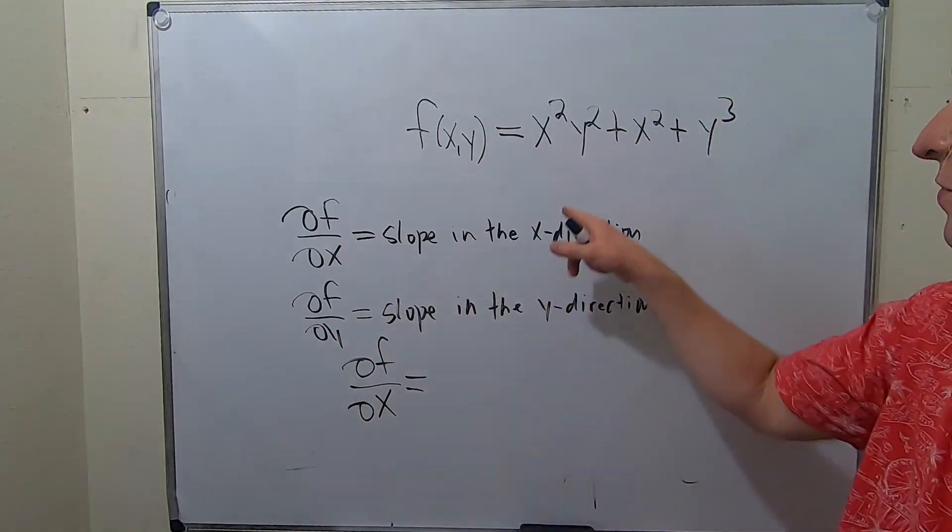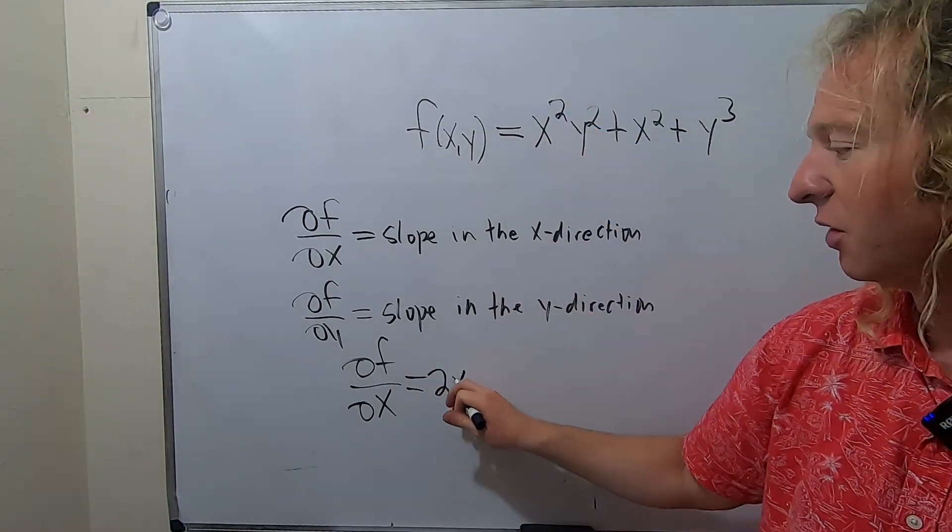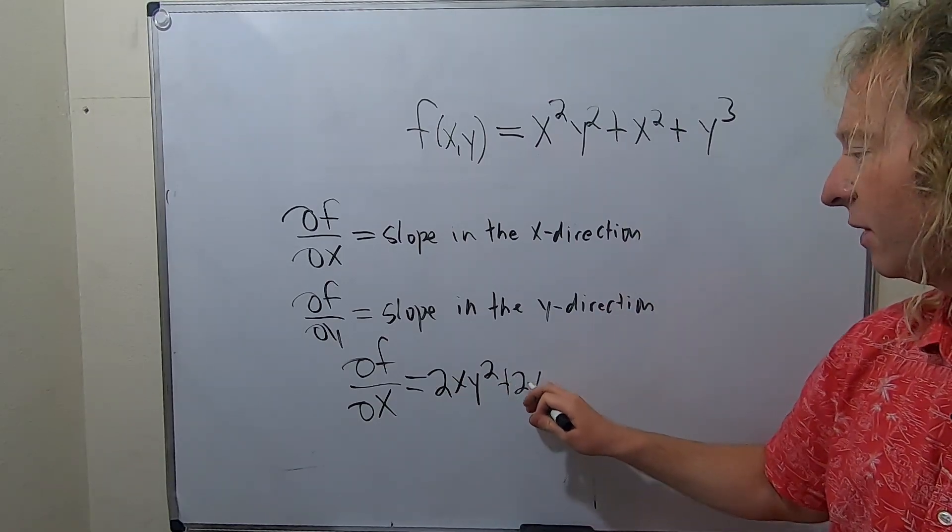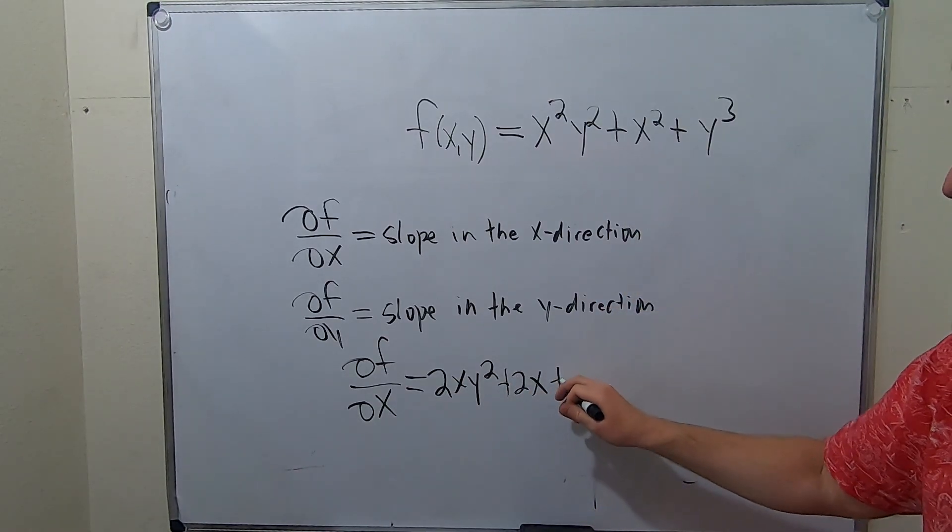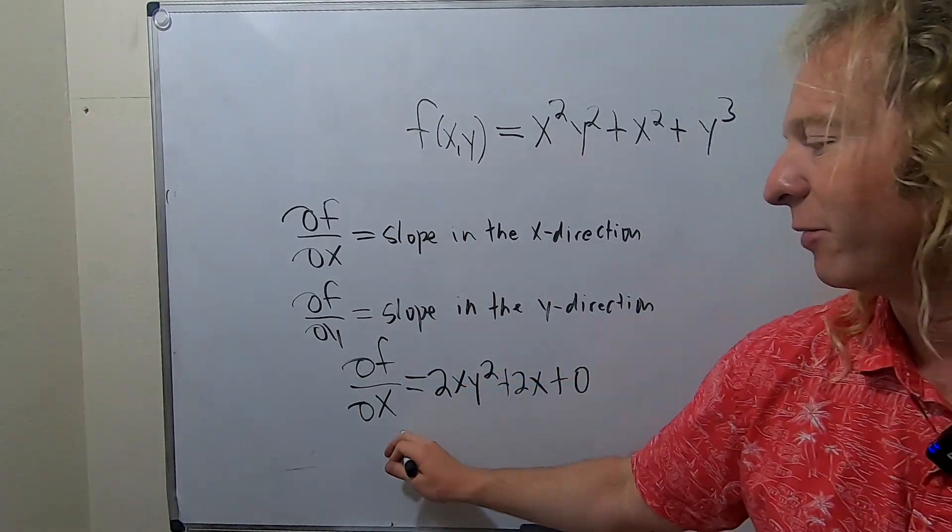Everything else is constant. This is a constant, so it hangs out. We just get 2x, and the y² hangs out—it's a constant. This is 2x, and this is 0. I'm just going to put 0 there for emphasis so you see that it actually is 0. I won't even bother to simplify it.